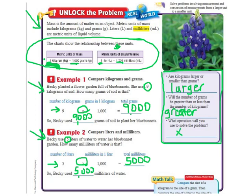Lesson 12.7 is pretty simple. All you're doing to change from kilograms to grams and liters to milliliters is taking the number that's in front and multiplying it by 1,000. If you're in my class, you should have filled out page 471. If you have any questions, just feel free to leave me a message. Thanks!